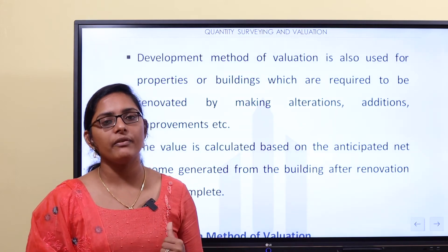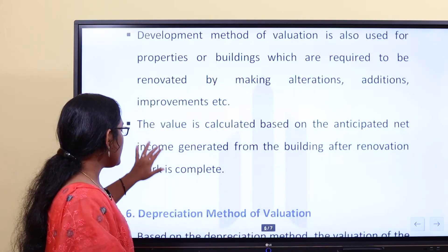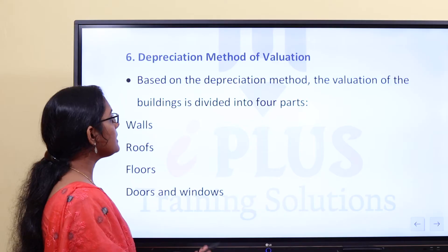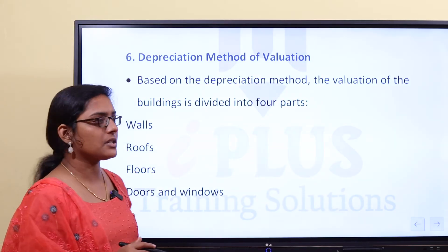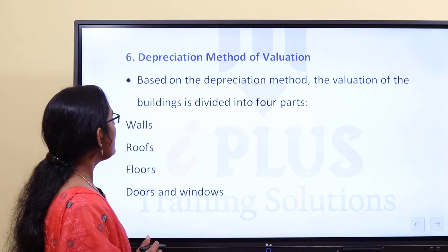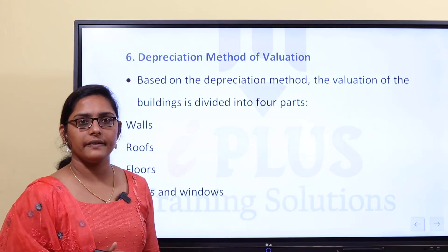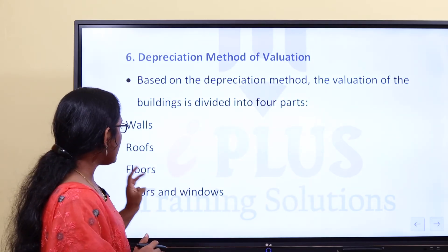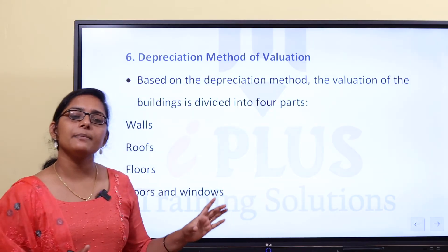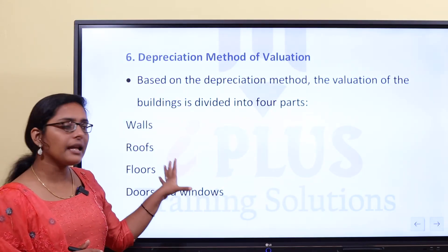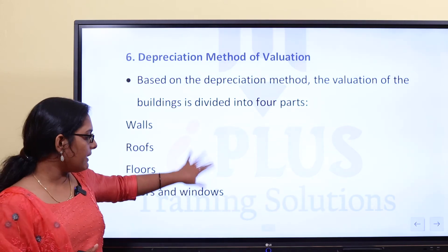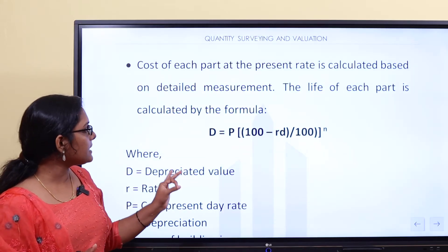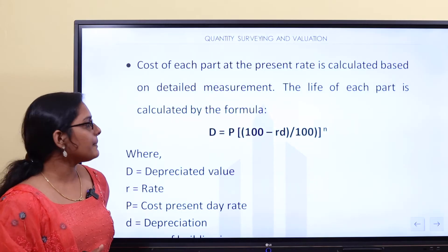The last method is the depreciation method of valuation. Based on this method, the building is divided into four parts: the first is Wall, the second is Roof, the third is Floors, and the last is Doors and Windows. The cost of each part is calculated based on detailed measurement and the life of each part is calculated.